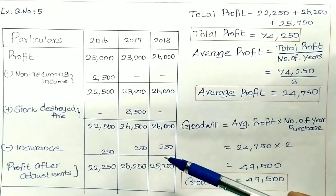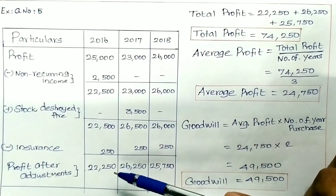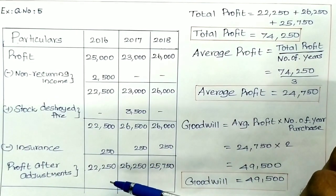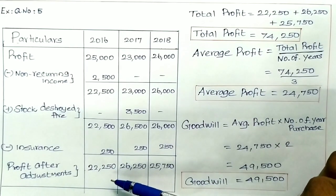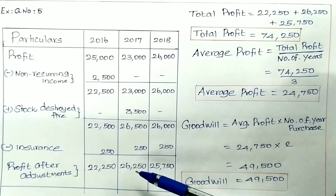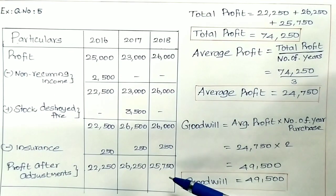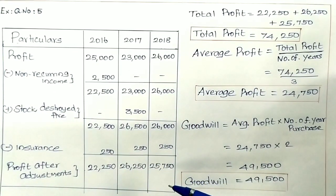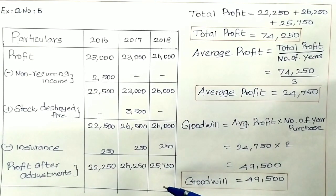After adjustments, the profit figures are: 2016 = 22,250; 2017 = 26,250; 2018 = 25,750. Now we calculate the total profit using these adjusted figures.